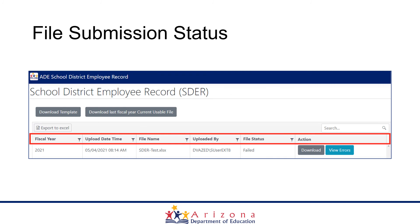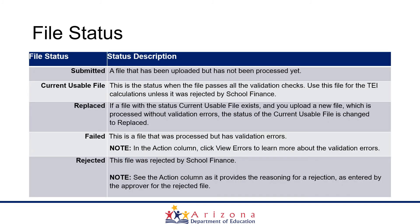Once you have uploaded the file, you will see the file submission status change. The first thing you will notice is that "Submitted" will show up on the file status. You will want to wait to see that the file status has changed to "Current Usable File." There are some validation errors within the SDR template — if you do have validation errors due to data entry issues, you can click on the blue button to the right to view them. As the system uploads and validates the information, wait for the status description to show "Current Usable File." If the file is replaced, the status will show "Replaced."